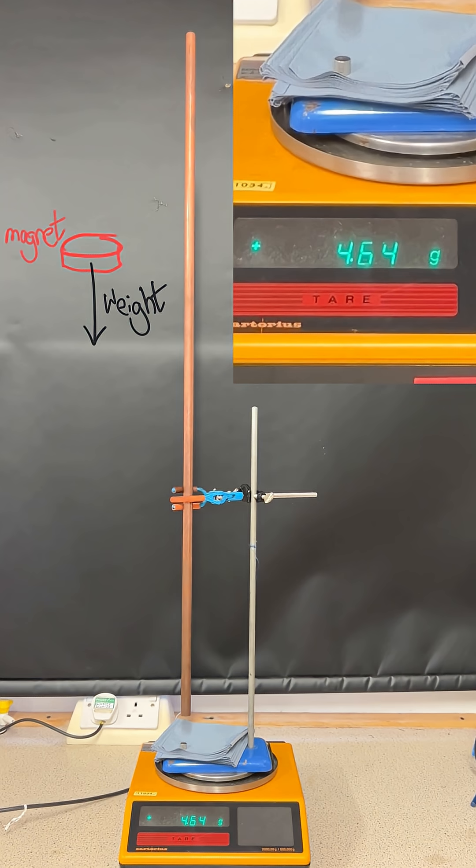As the magnet falls, the magnetic flux linking the copper pipe changes, which induces a potential difference or EMF across the pipe, which causes a current to flow around in the pipe, which creates its own magnetic field which opposes the change that caused it, which creates a magnetic force up on the magnet.